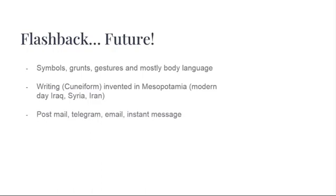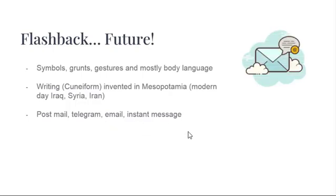Then we began writing letters and sending them through the post mail, which took weeks, even months, to get delivered. Then we have Telegram, which shortened the delivery time to a few days. And then we have electronic mail or email, and now instant messaging, which lets you send and receive messages in real time, as long as there is an internet connection.